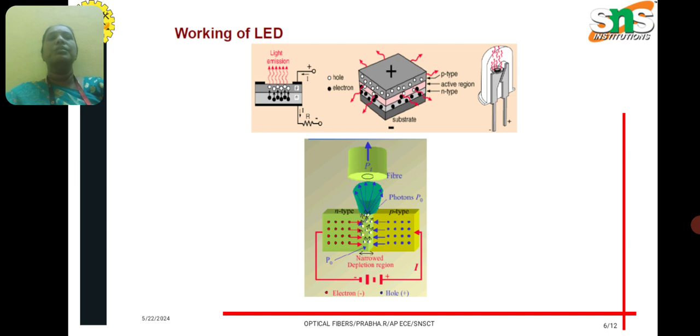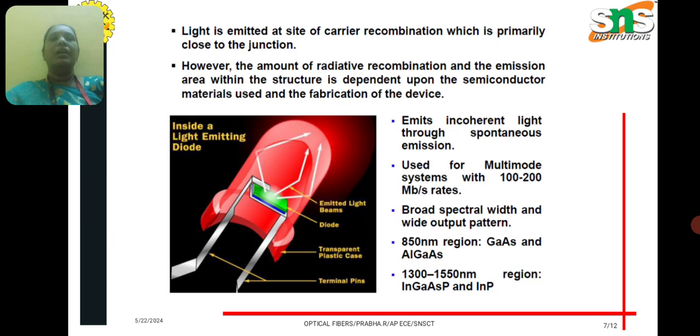This is the LED structure working shown in the diagram. When the holes and electrons are recombined in the recombination region, the light is emitted. The light is emitted at the site of carrier recombination, which is primarily close to the junction.